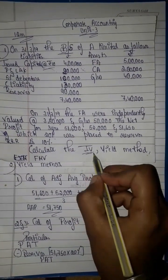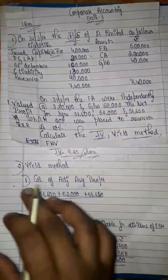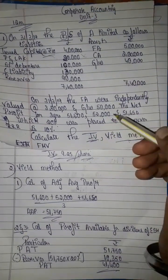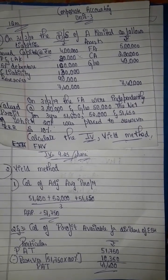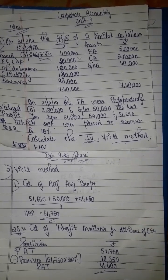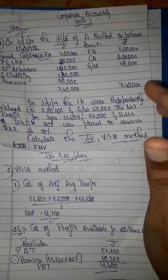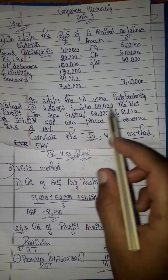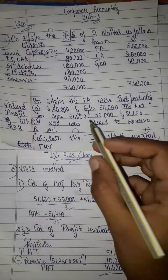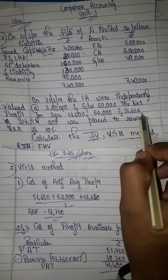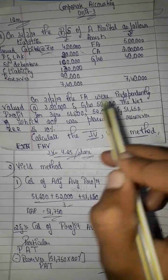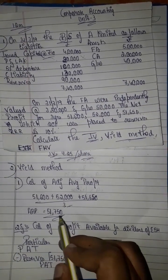The next method is the yield value method. First we need to calculate the adjusted average profit. We use the simple average method because profits fluctuate. Adjusted average profit equals total profit divided by number of years: 51,600 plus 52,000 plus 51,650 divided by 3, which equals 51,750.